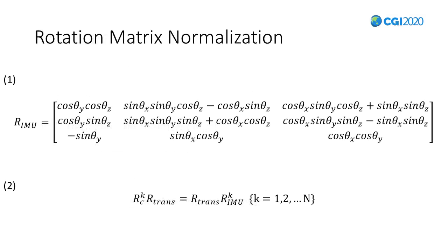Here are the two essential equations. The first is the formula to calculate the rotation matrix from the Euler angles — that is theta in three directions of the coordinates: theta x, y, and z. The second formula represents the relationship between the rotation matrix of IMU and the one of the camera, where R_k is the camera rotation matrix and R_IMU_k is the IMU rotation matrix. K stands for the order of the camera, and R_trans means the transformation between camera and IMU.